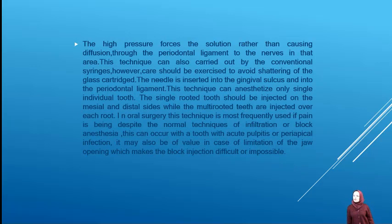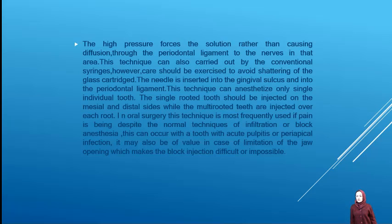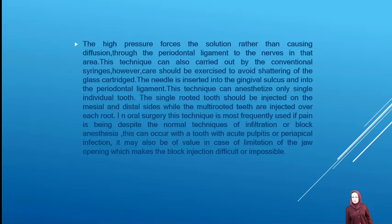The high pressure forces the solution through the periodontal ligament to the nerves in the area. This technique can also be carried out by a conventional syringe; however, care must be exercised to avoid shattering of the glass cartridge. The needle is inserted into the gingival sulcus and into the periodontal ligament. This technique can anesthetize only a single individual tooth; single-rooted teeth are injected on the mesial and distal sides, while multi-rooted teeth are injected over each root. In oral surgery, this technique is used when pain persists despite normal infiltration or block anesthesia, as with acute pulpitis or periapical infection, and in cases of limited mouth opening.